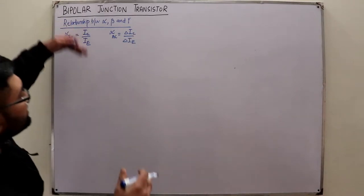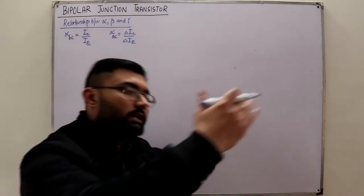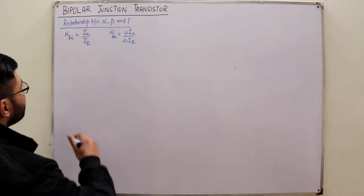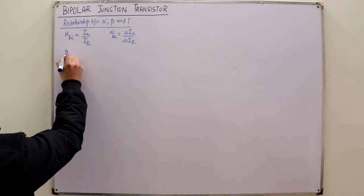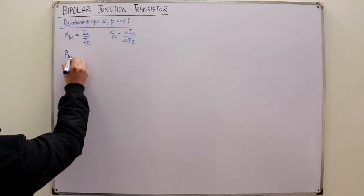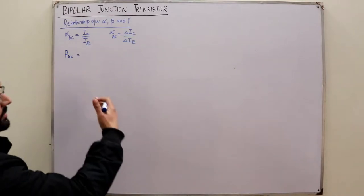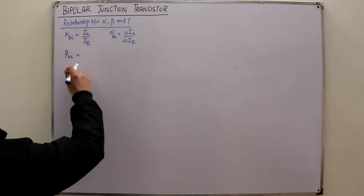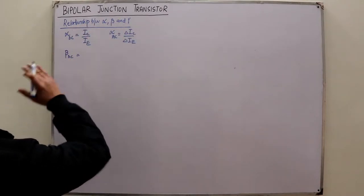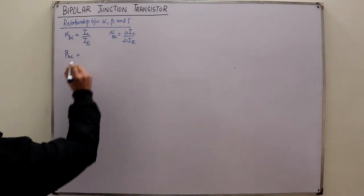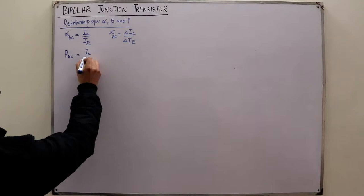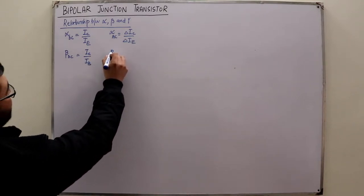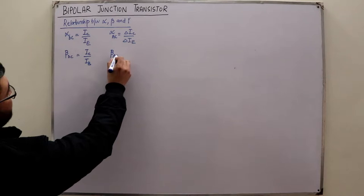For the DC case it is a fixed value; for the AC case we take the difference between any two points. Similarly, beta DC is the current amplification factor for the common emitter configuration — the output is IC and the input is IB — so beta DC equals IC divided by IB.